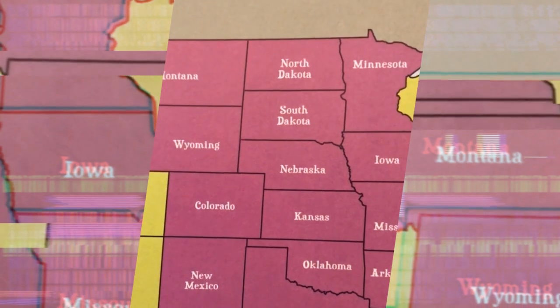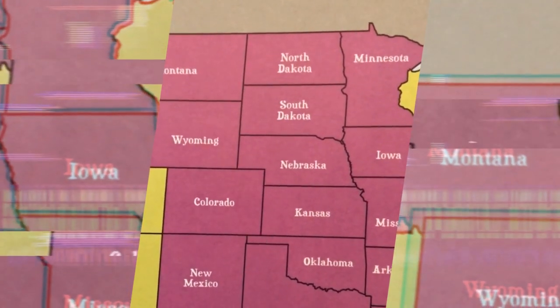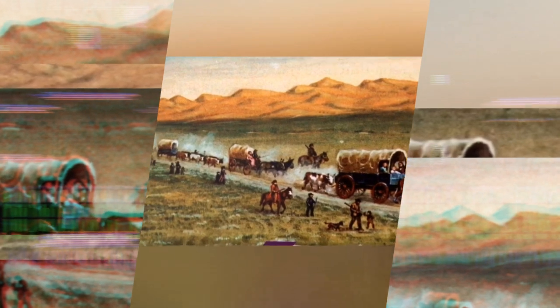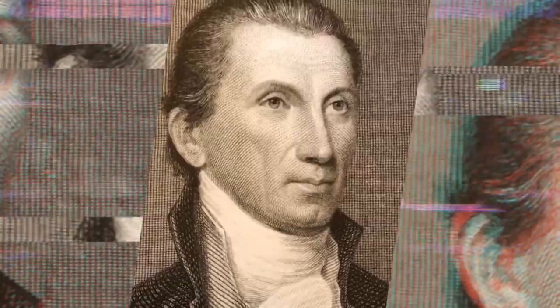These are all the states that were formed from the Louisiana Purchase. Without the Louisiana Purchase, there would be no Oregon Trail, no massive migration that led to the West, and there would be no Gold Rush in California in 1849.